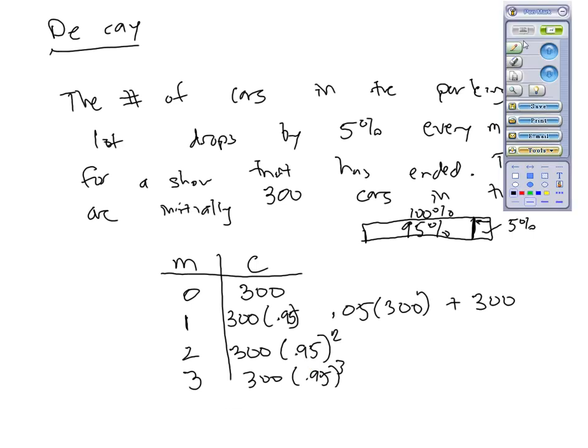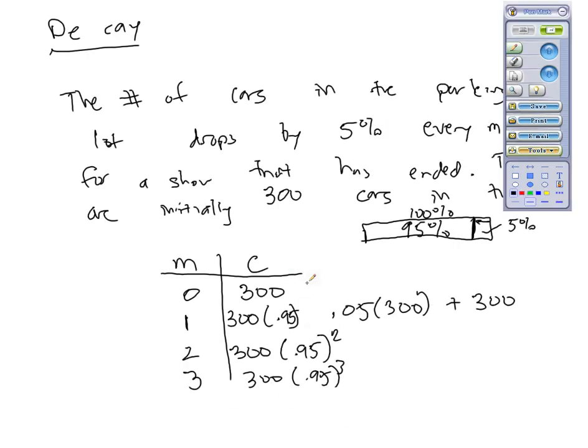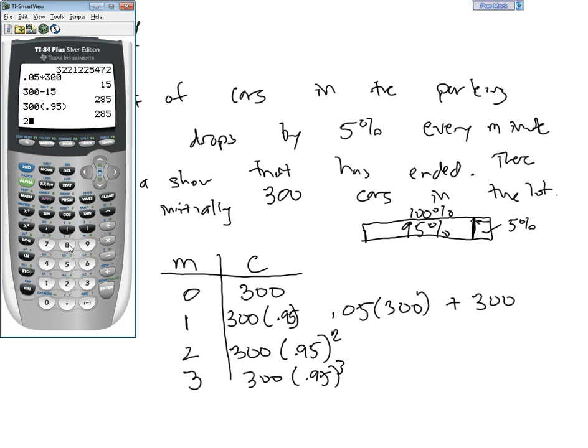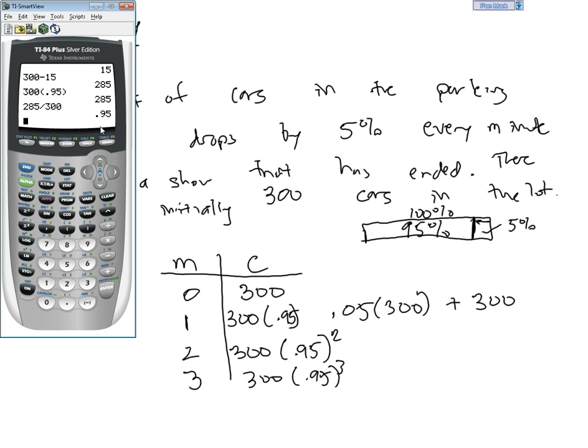So to generalize this more in terms of what these exponential functions are looking like, because again, if you took the ratio of 285 to 300, for example, what should you get? Well, if the ratio is constant, you're getting the amount of your decay factor.